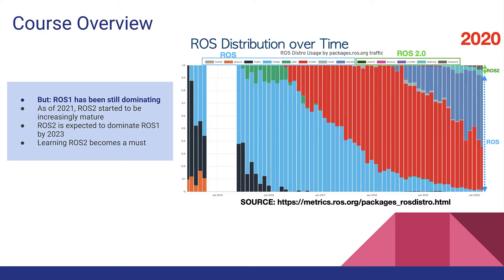However, things have been changing since 2021, where ROS2 has accomplished most of the missing functionalities, including navigation, transformations, and others. It is expected that ROS2 will completely dominate, or at least start to dominate ROS1, in 2023.